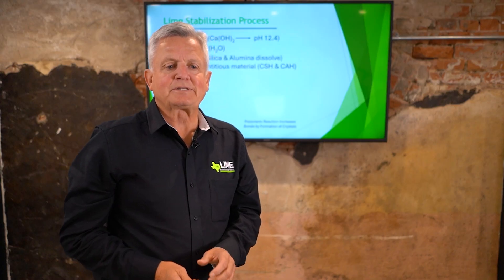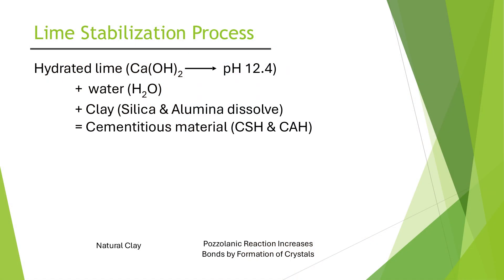If you look at the lime stabilization process in general, if you take calcium hydroxide, which has a pH of about 12.4, and you introduce water and a pozzolone — which is the clay that's a source of silicon and alumina — you form this pozzolonic cement or cementitious material, referred to as CSH and CAH.